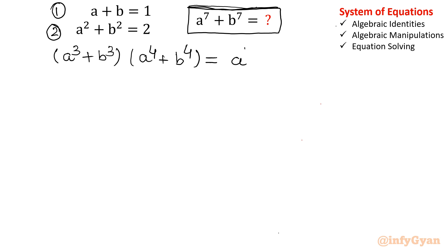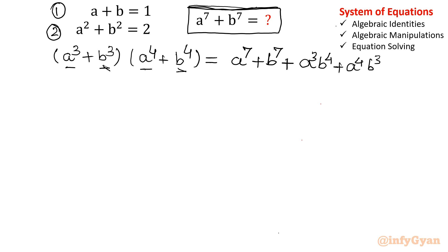So (a³+b³)(a⁴+b⁴) gives a⁷, then b³ times b⁴ gives b⁷, plus cross products a³b⁴ and a⁴b³. So to find a⁷ plus b⁷, we rearrange: a⁷ plus b⁷ equals (a³+b³)(a⁴+b⁴) minus the cross terms. So a³+b³ and a⁴+b⁴ are what we actually require.